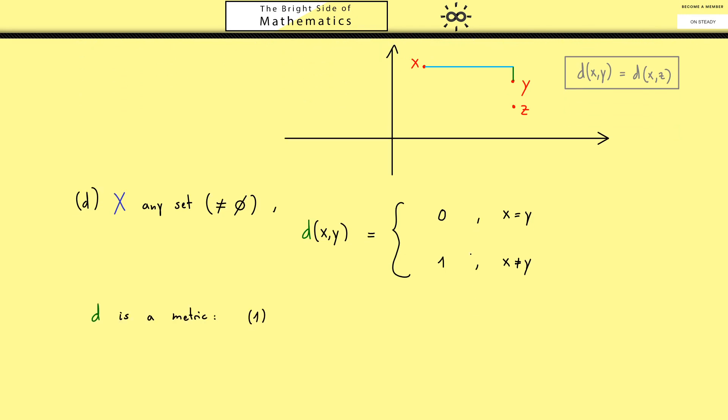As it happens very often, the first two properties are not a problem at all. It's positive definite by our construction, so no problem here. The second property is the symmetry, and here you can see, the whole definition is symmetric, so no problem here at all.